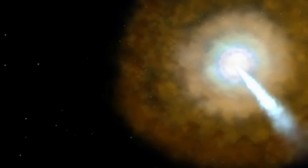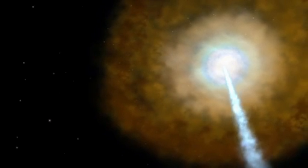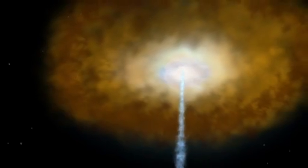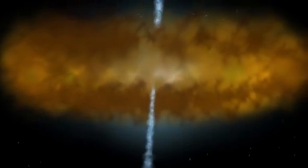What emission we detect from an active black hole is a function of how we see it, whether we're looking face-on and into one of its jets, or viewing it from the side through the disk of gas and dust that surrounds it.